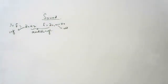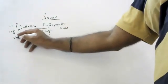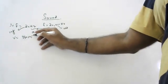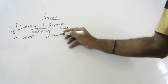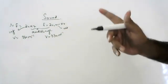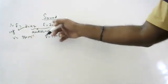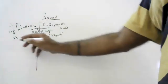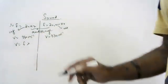Any sound the human ear can hear is between frequency 20 and 20,000 hertz. The speed of sound in air is 330 meters per second. The question asks us to find the wavelength corresponding to the audible range. The formula for wavelength is v equals f times lambda.